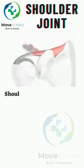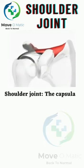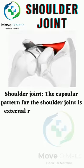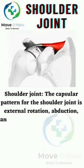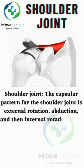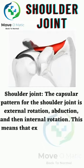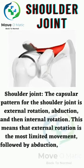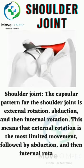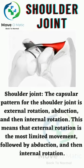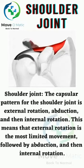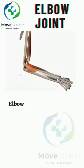Shoulder joint: The capsular pattern for the shoulder joint is external rotation, abduction, and then internal rotation. This means that external rotation is the most limited movement, followed by abduction, and then internal rotation.